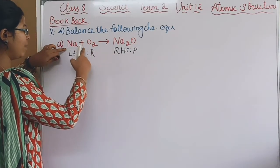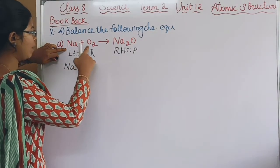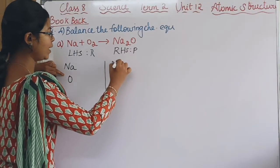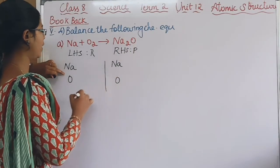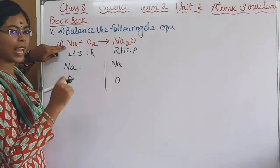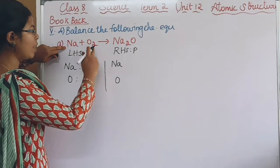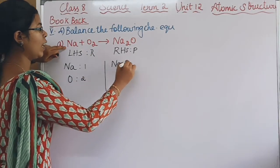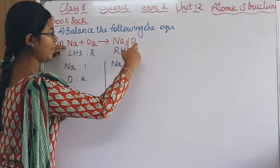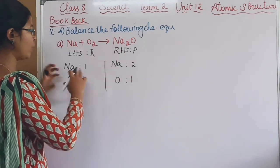If you look at the reactant, how many elements are there? Na is sodium and oxygen. In the product, Na is an element and oxygen. In the reactant there are sodium atoms — 2 atoms. In the sodium element there are 2 atoms, and in the oxygen element there is 1 atom. There are 2 atoms on each side.